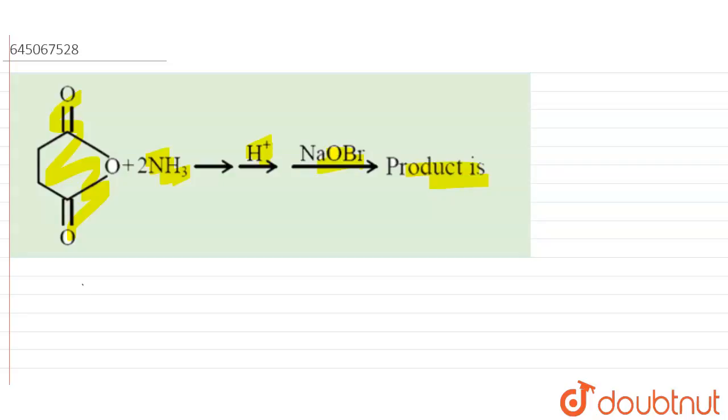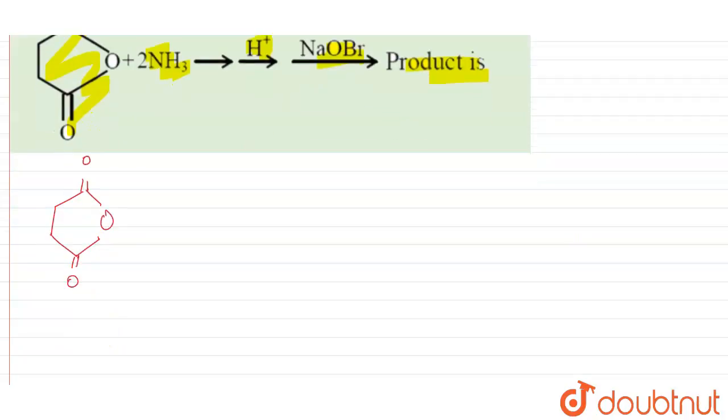We have double bond O, then we have two CH2, then again there is a presence of double bond oxygen. This is treated with ammonia, that means two moles of ammonia.